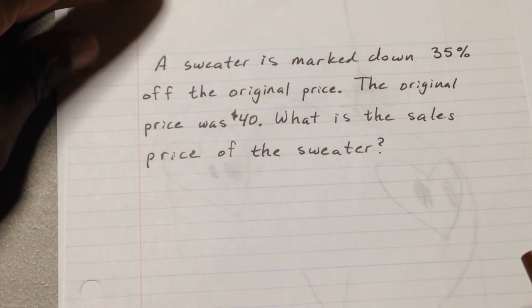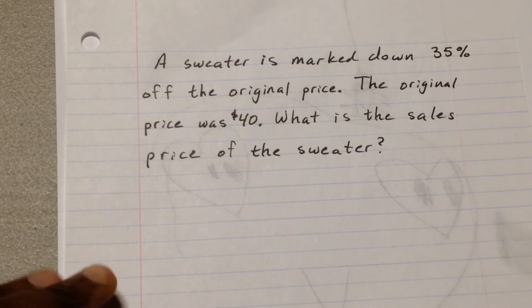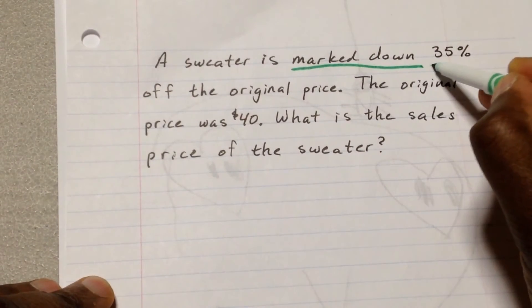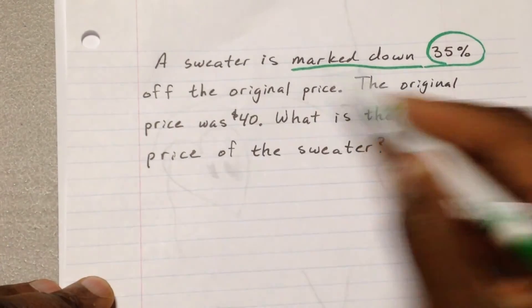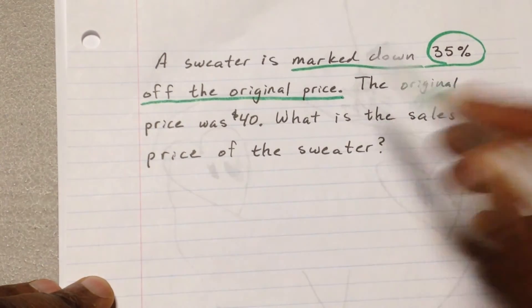A sweater is marked down 35% off the original price. The original price was $40. What is the sales price of the sweater? So the sweater is marked down and markdown rate is 35%. Let's make sure it's going to be 35% off what?